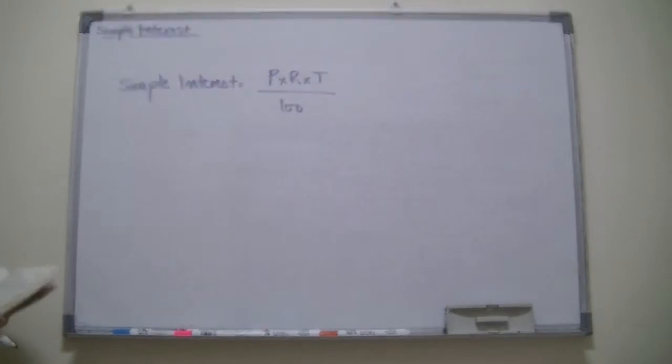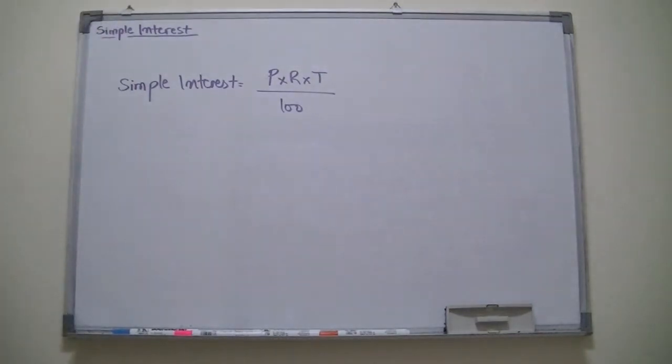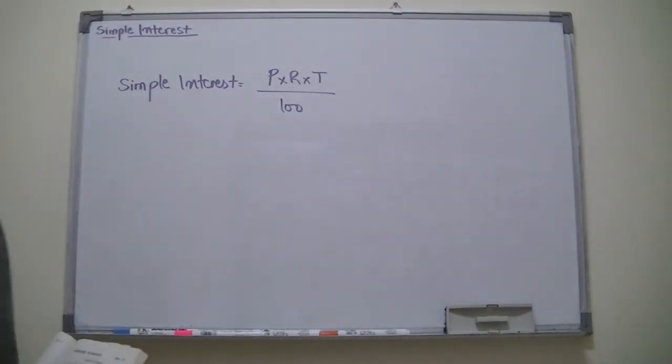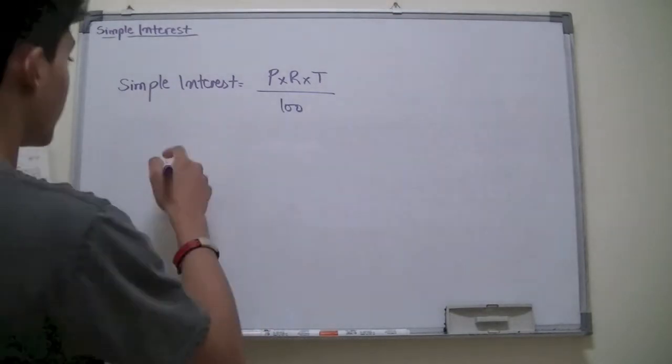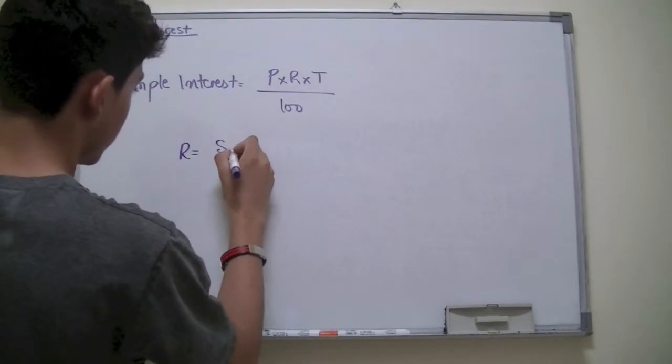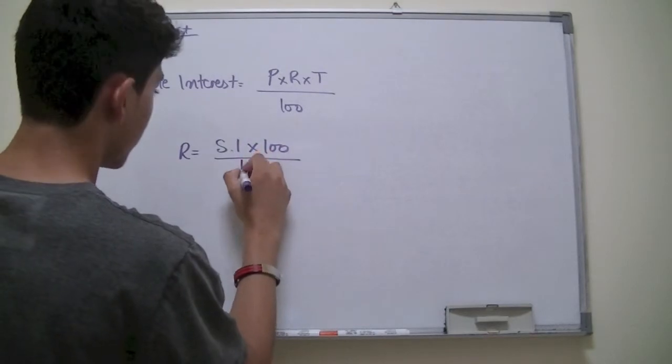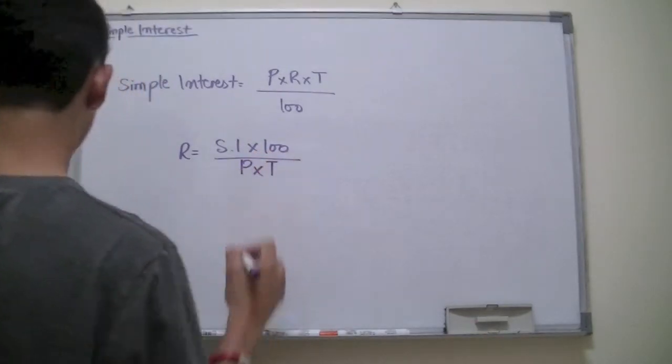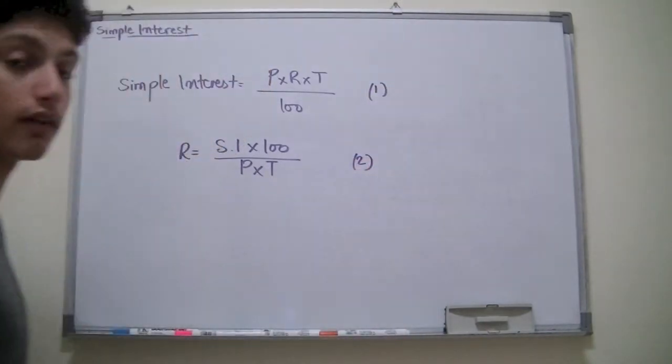Instead of saying price, we have a certain word which is known as principal. R is basically the rate per annum. Now from the formula, we can deduce the formulas for time, rate, and principal. If we were equal to R, we would say simple interest times 100 over P times T. This is the first derived formula, and this is the second derived formula.